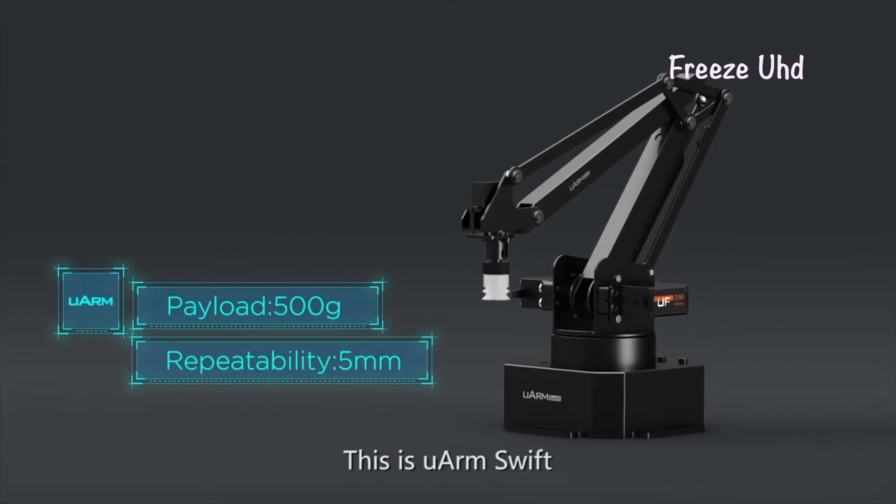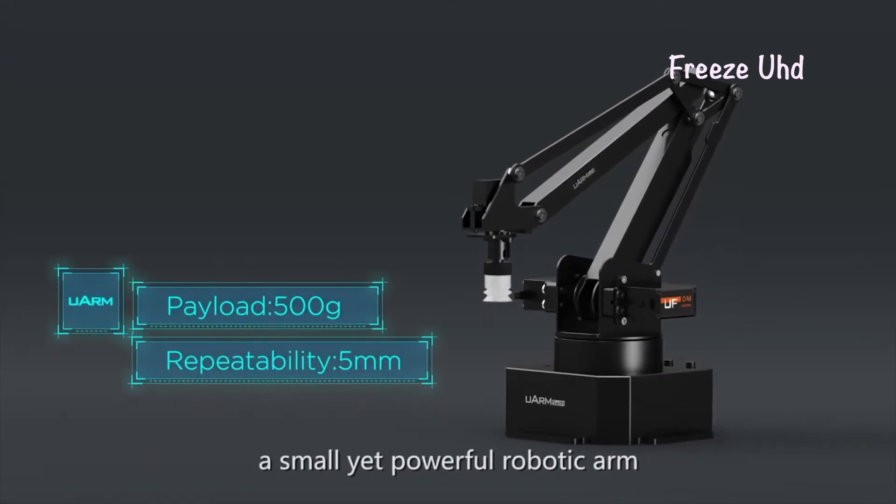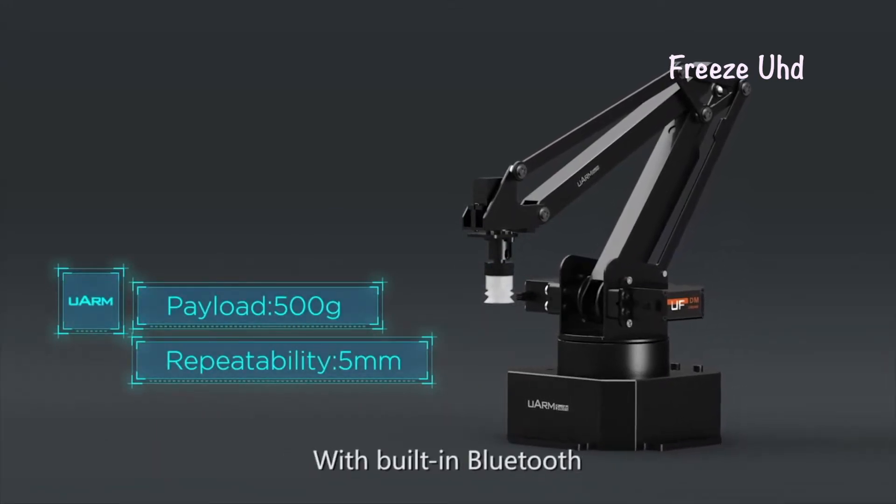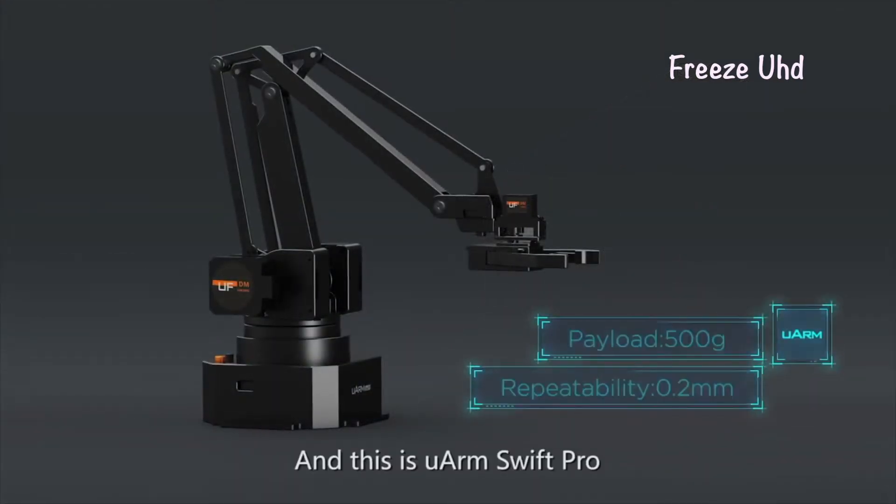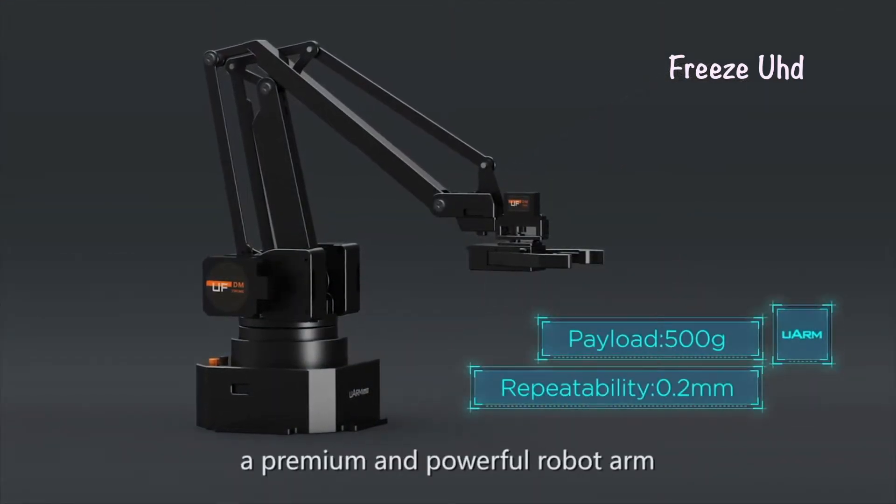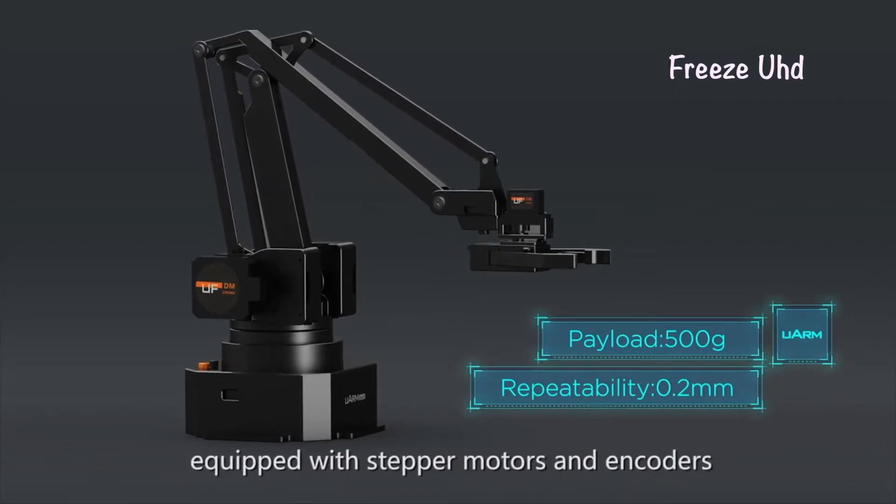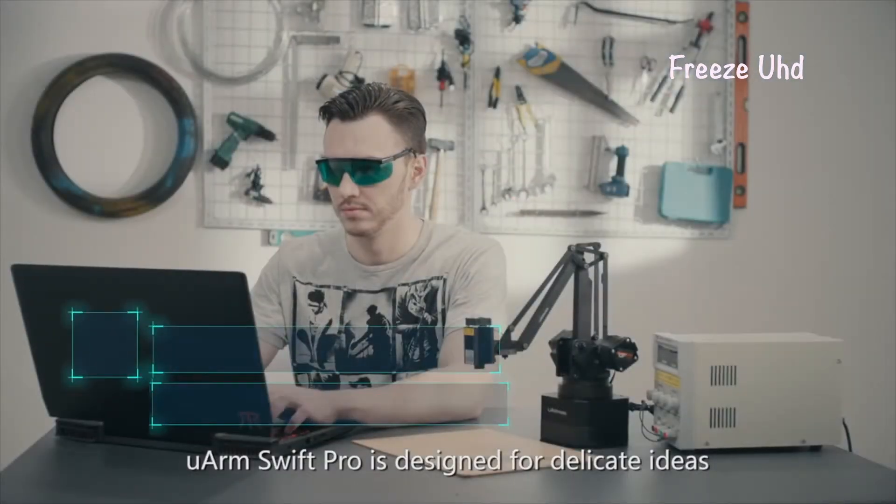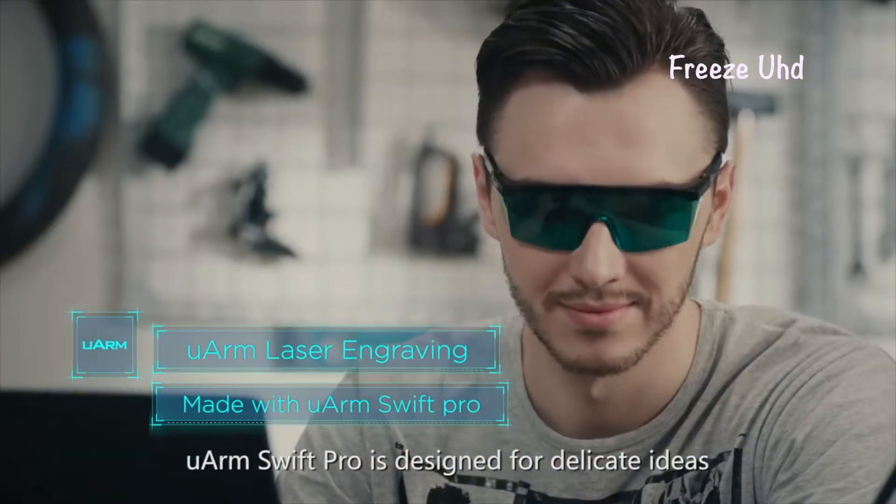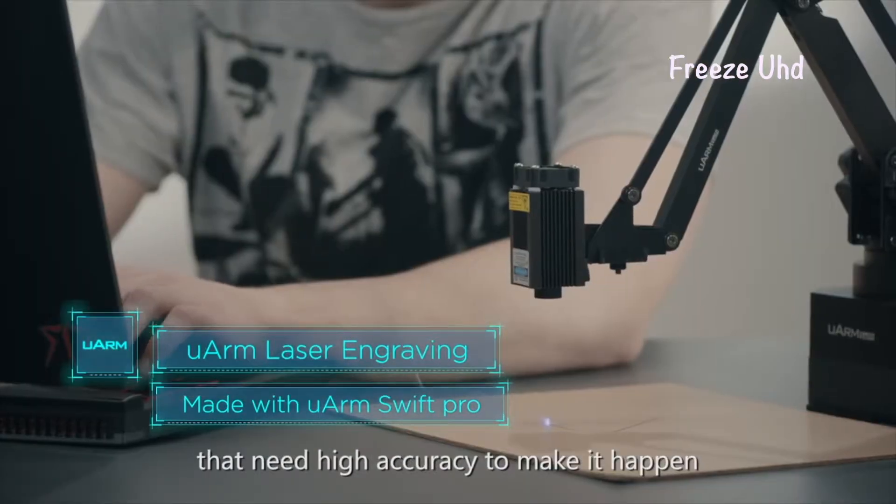This is U-Arm Swift, a small yet powerful robotic arm with built-in Bluetooth. And this is U-Arm Swift Pro, a premium and powerful robot arm equipped with stepper motors and encoders. U-Arm Swift Pro is designed for delicate ideas that need high accuracy to make it happen.